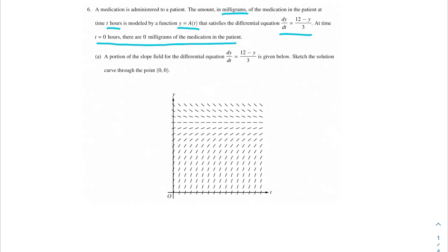We're given a slope field for part a for the differential equation, and we want to sketch the solution curve through the point (0, 0). We know that our solution curve is going to touch the point (0, 0), so we're going to start there and follow the slope field from that point to the asymptote. We know that we're not going to touch y equals 12 because at that point the derivative is undefined. We want to make sure that this solution curve is increasing and concave down and that it is approaching but not touching y equals 12.